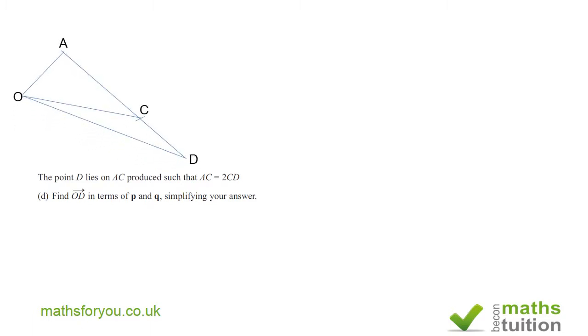Now for this one, it says the point D lies on AC produced such that AC is equal to 2CD. So find OD in terms of P and Q. I've put the values of OA, OC, and AC. We know AC is double CD. If you divide both sides by 2, a half AC would then be CD.